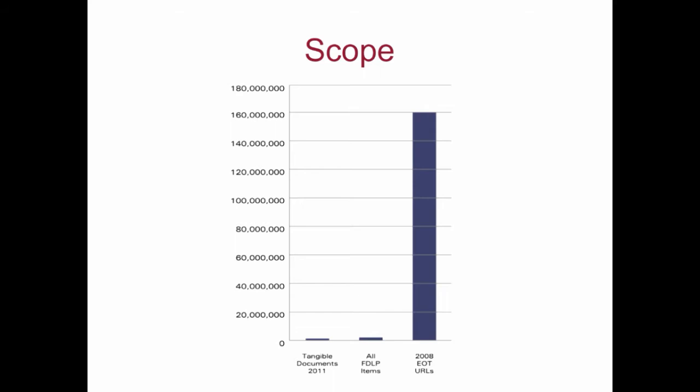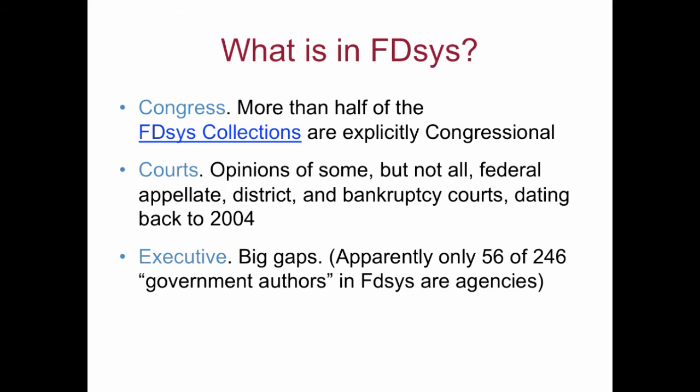You might ask, isn't all that in GPO's FDCIS? The answer is we don't know because GPO does not provide statistics on the quantity of its holdings. We know that most of what is in FDCIS is from a single branch of government — more than half of GPO's listed collections are explicitly congressional. GPO has been getting more judicial data, specifically opinions of some federal appellate, district, and bankruptcy courts, but only going back to 2004. The biggest gap in FDCIS is information from executive agencies — apparently only 56 of 181 listed government authors are executive department agencies, while the 2013 U.S. Government Manual lists 246 agencies.